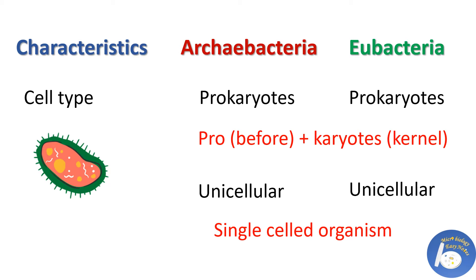The first characteristic is cell type. Archaebacteria and Eubacteria both are prokaryotes — these are primitive, simple type of cells. They don't have membrane-bound cell organelles, and they don't have a nuclear membrane around their nucleus. Archaebacteria and Eubacteria are both unicellular; they are single-celled organisms, unlike multicellular organisms that consist of multiple cells.